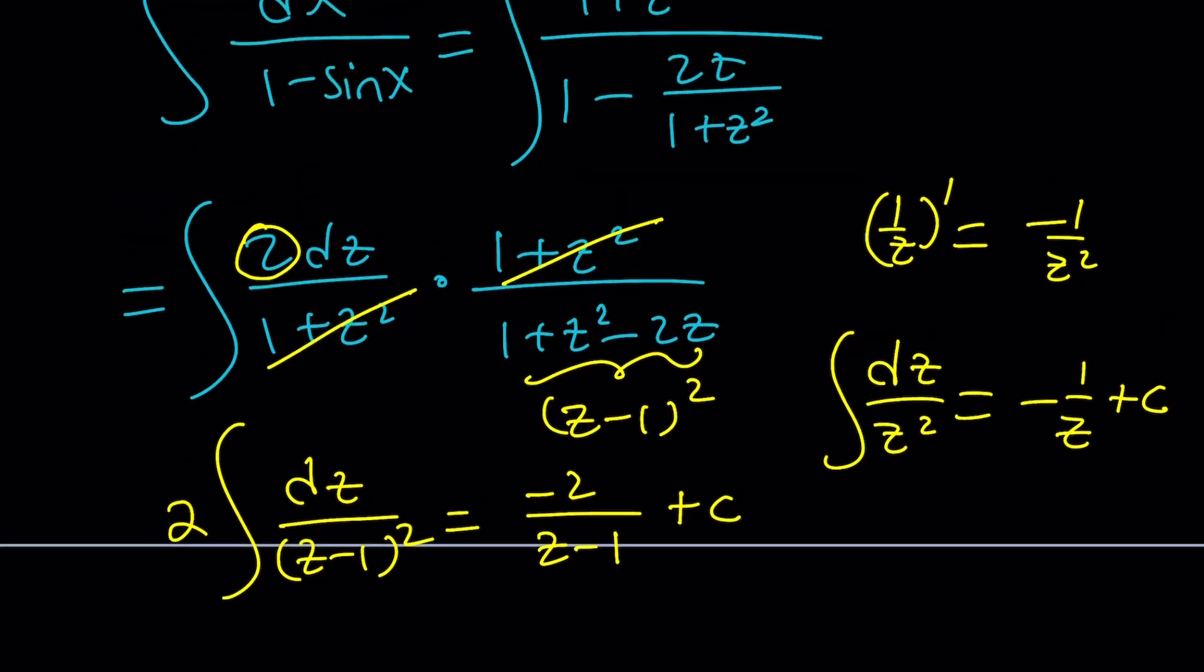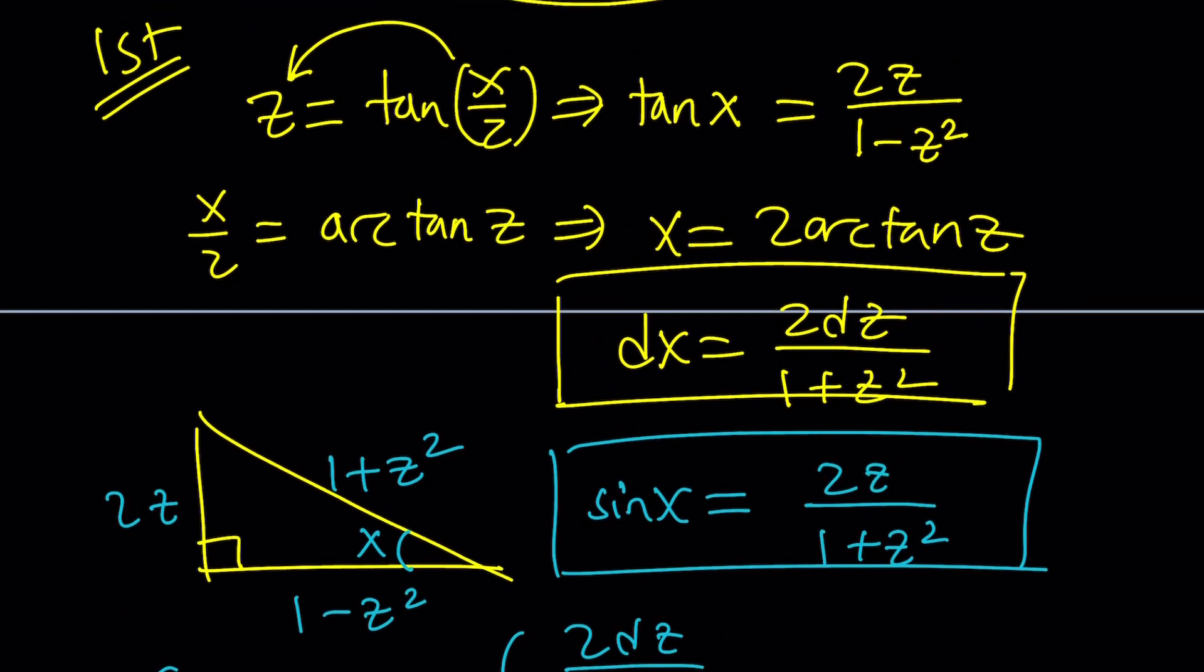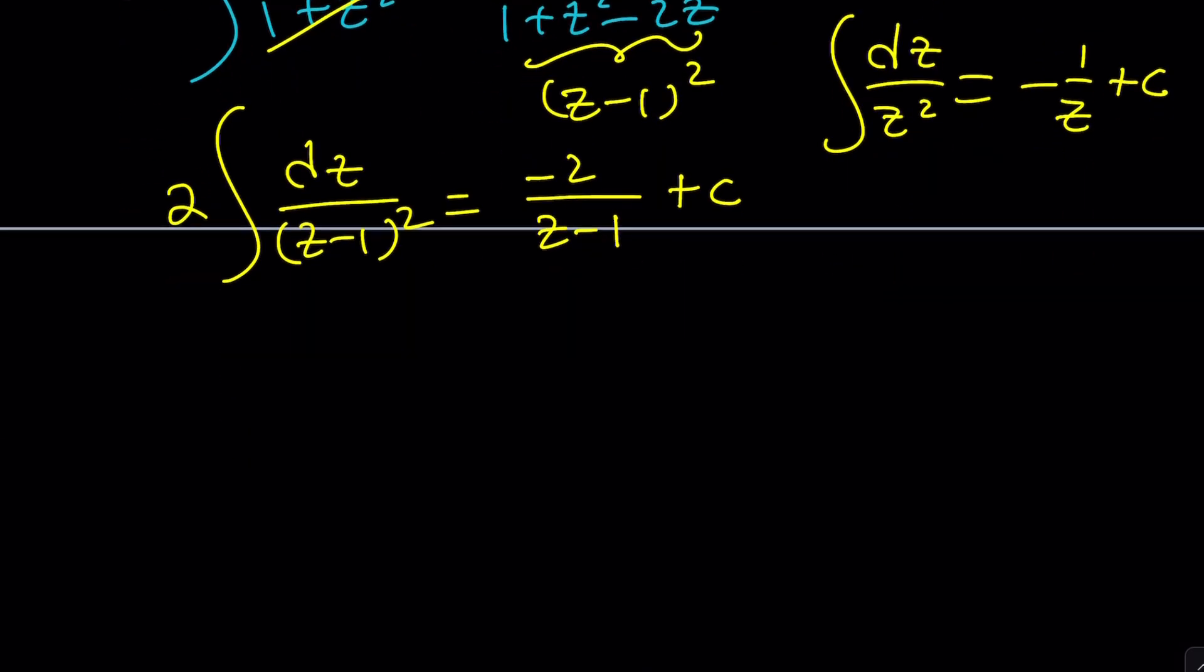So it's going to be like negative 2 over z minus 1 and then plus c. That's it, right? But what is z? z is tangent x over 2. So now you can go ahead and replace z with tangent x over 2 minus 1 plus c. And that will be the answer. But obviously, you can kind of work this out. Write it as sine over cosine. Make a common denominator. Use some identities, so on and so forth. But I'm going to leave it at that because when we do the other methods, we're going to be getting different things. And hopefully, you can compare them at the end.